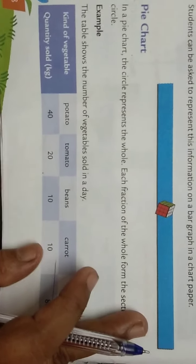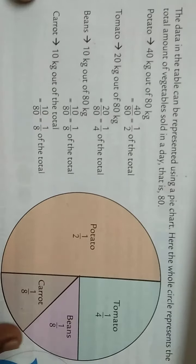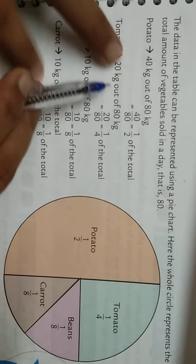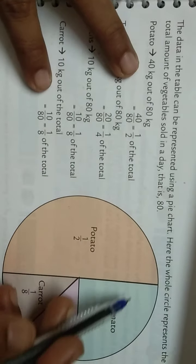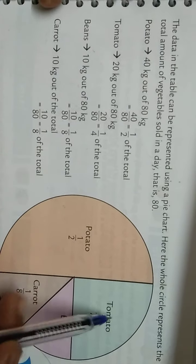This information I'm talking about is not for detailed study. Here is data represented in circular form: potato 40 kilograms. The given representation is another method. You just have to know when we represent data in circular form, that is known as a pie chart.